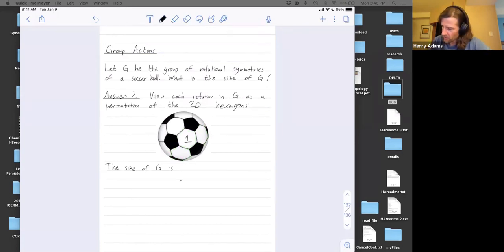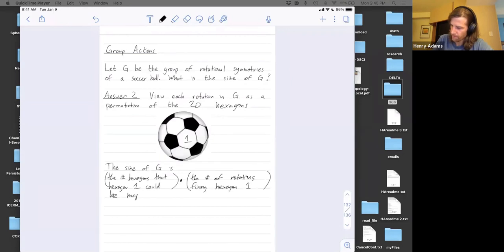So the size of the group is, it's a product of two numbers. The number of rotations fixing hexagon one, meaning mapping hexagon one to itself, times the number of hexagons that hexagon one could be mapped to.